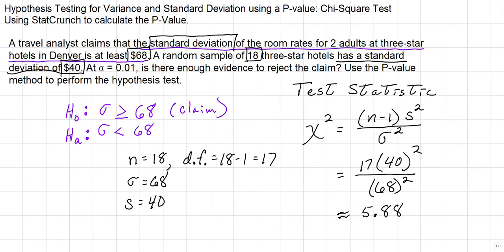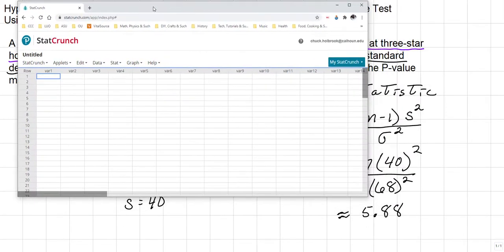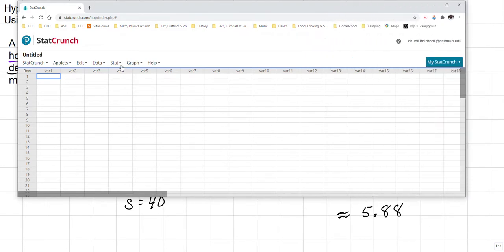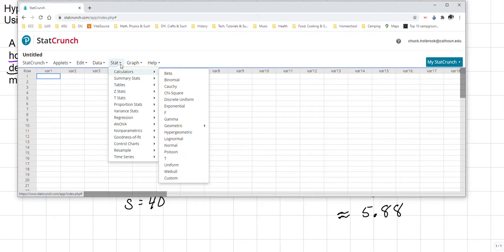Go ahead and open StatCrunch, and you can open that from any problem that you're working. And we're going to go to Stat. We're going to put our mouse over the down arrow. We're going to go to Calculators, and we're going to scroll down to Chi-Square.